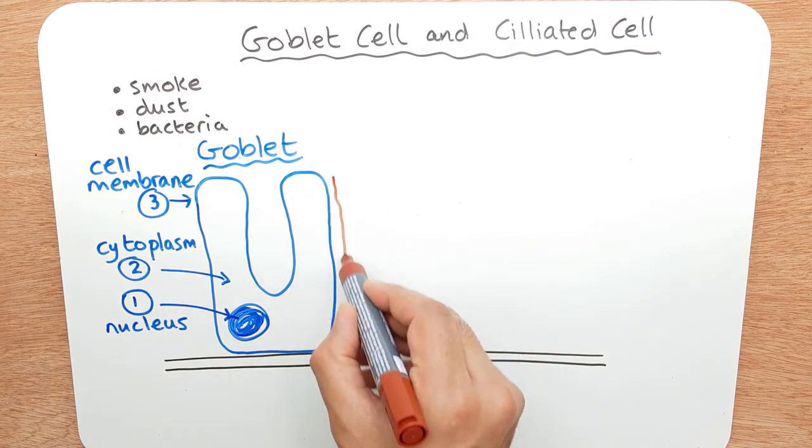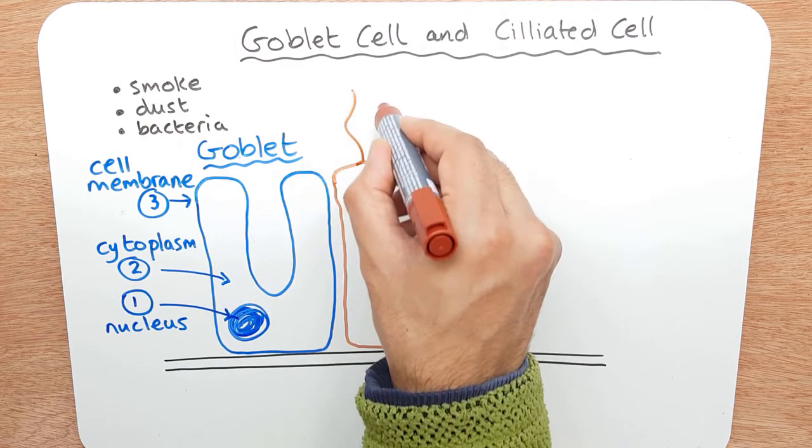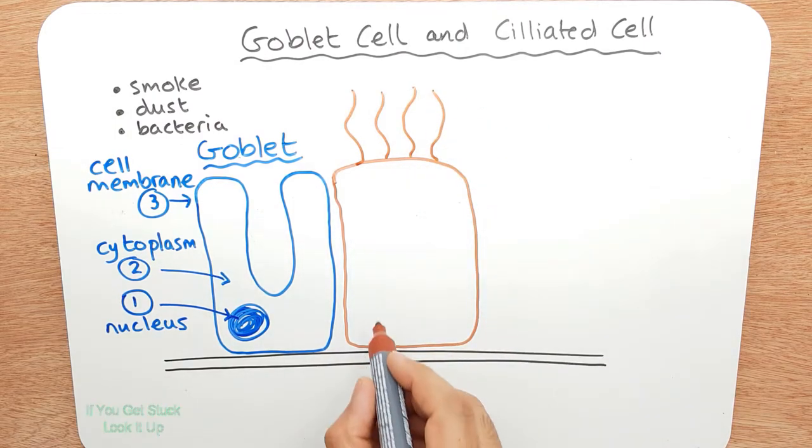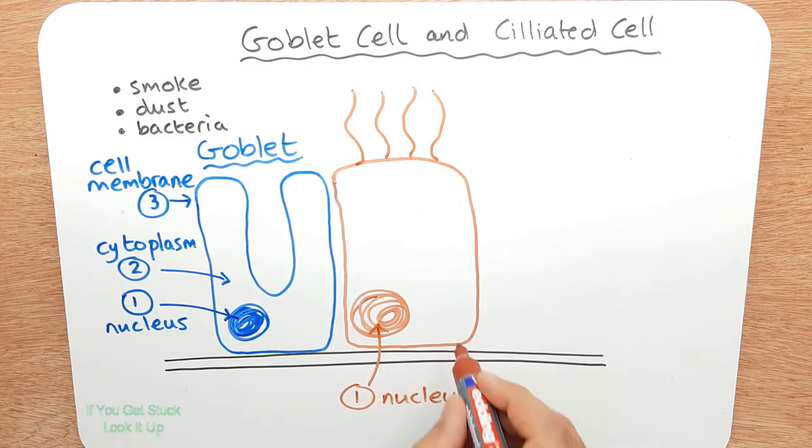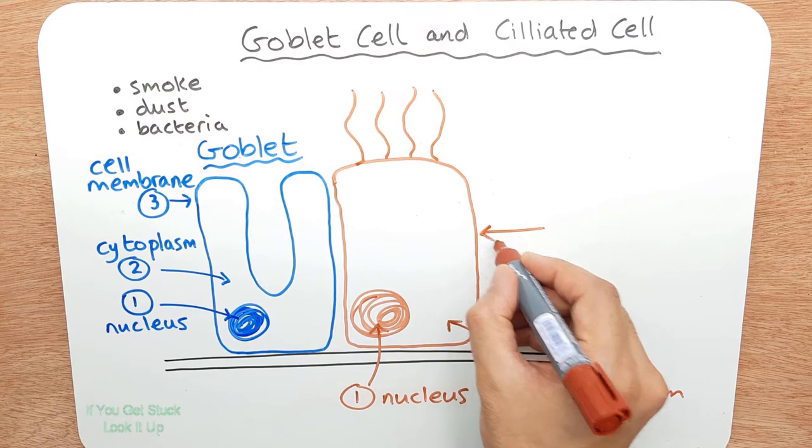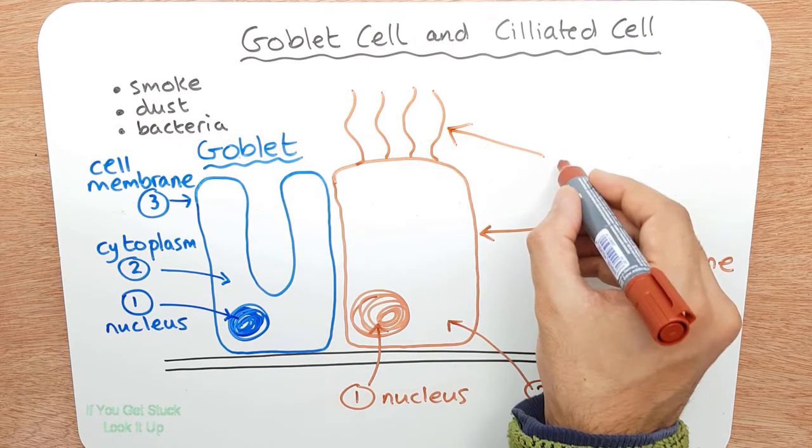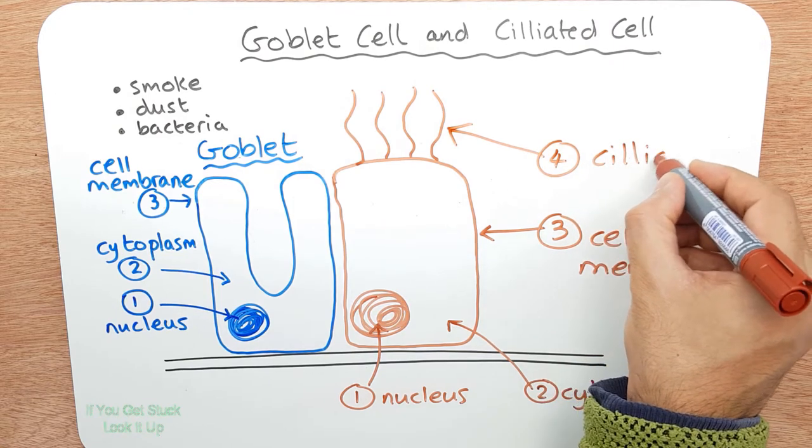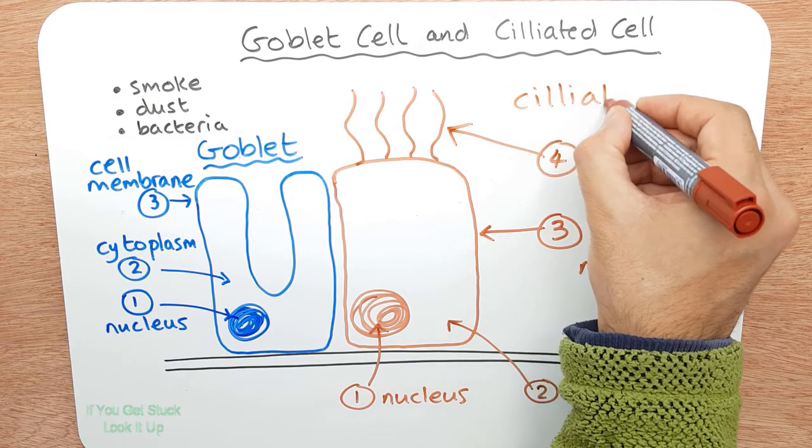Now we've got another cell. It's like a long column. And you've got these hair-like structures, the cilia. You've got your nucleus. So let's label that up. That's our nucleus. Inside, we've got our cytoplasm. We also have the cell membrane. And this hair-like structure here are the cilia. And this cell you'll see it being called the ciliated cell.